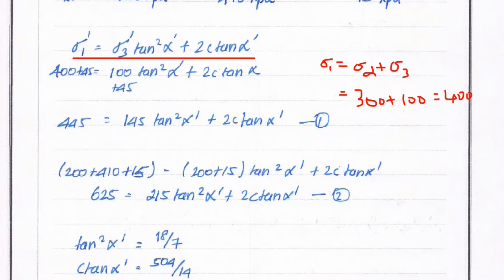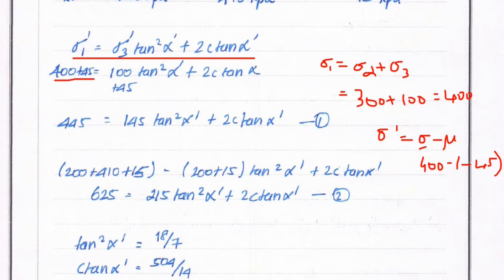For Test 1: sigma d equals 300 and sigma 3 equals 100, so sigma 1 equals 400 kPa. Since we need effective stresses, sigma dash equals total stress minus pore water pressure. So sigma 1 dash equals 400 minus (minus 45) equals 445 kPa, and sigma 3 dash equals 100 minus (minus 45) equals 145 kPa. This gives Equation 1: 445 equals 145 tan squared alpha plus 2c tan alpha.